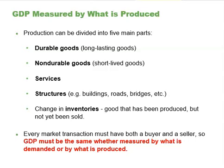The fifth component is change in inventories. Inventories are goods that have been produced but not yet sold. In the United States, the largest part of GDP is services.